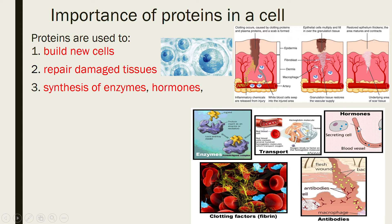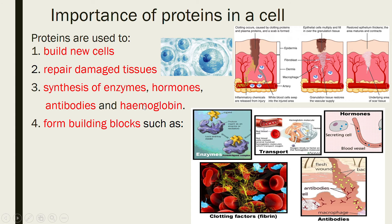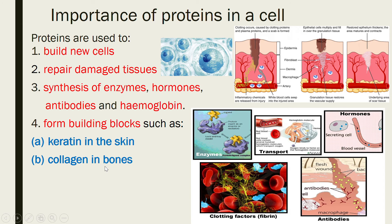Proteins are also involved in the synthesis of enzymes and hormones — chemical substances secreted by glands to act on specific targeted organs — as well as antibodies and hemoglobin in red blood cells, which is responsible for transporting oxygen. These are all made up of proteins.